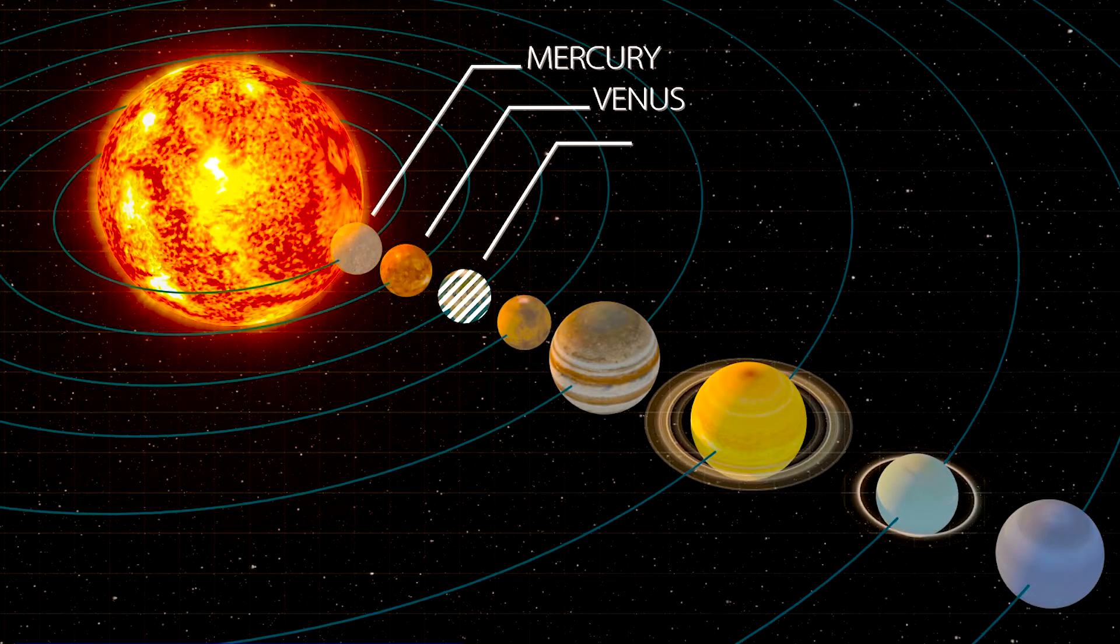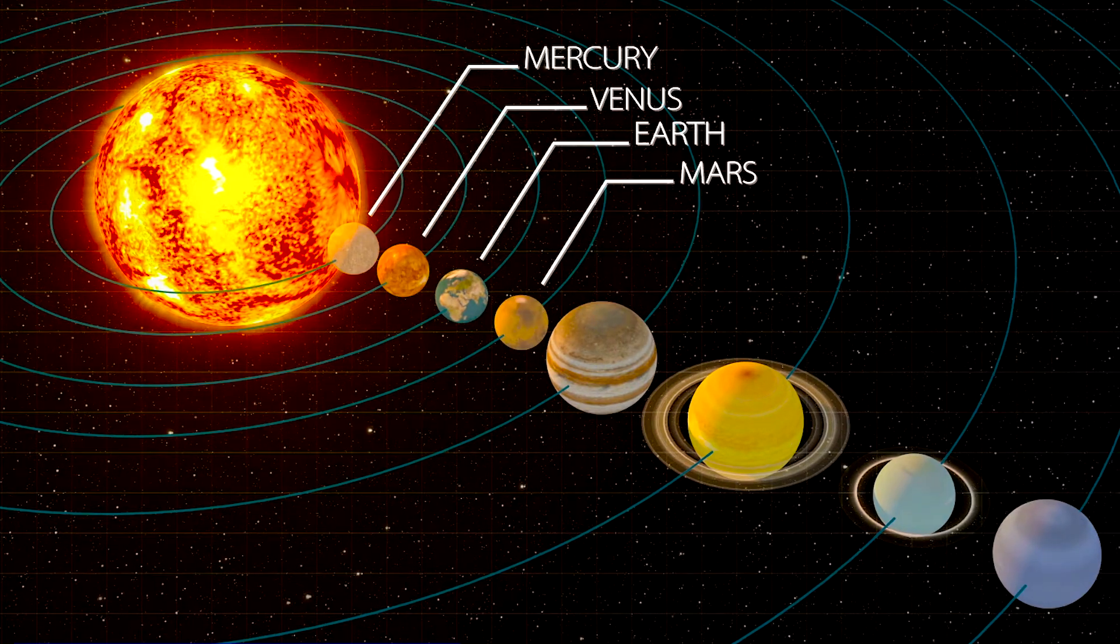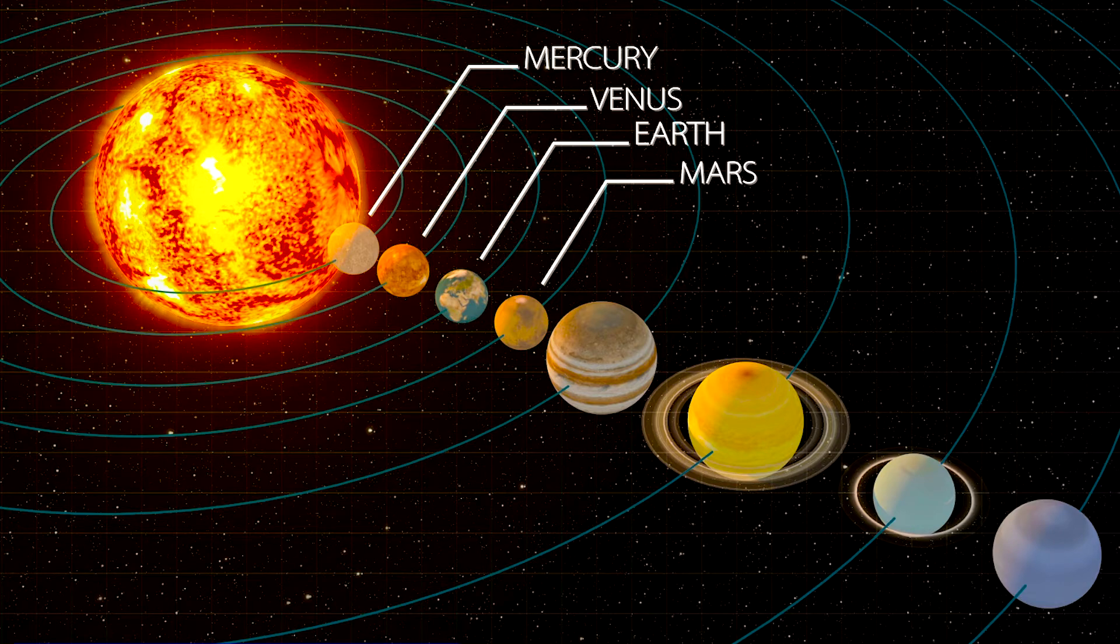The planets close to the sun are called Mercury, Venus, Earth, and Mars. They are small, and they are made of rock.